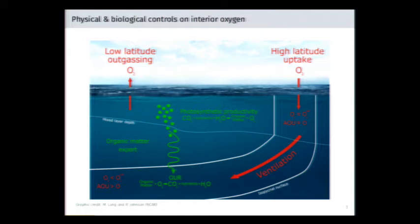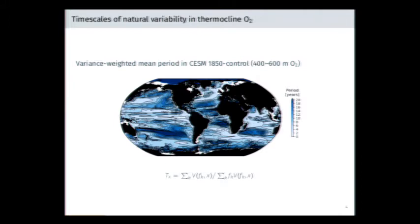We can see that in the context of a climate model. What I'm plotting here is the dominant period of variability of oxygen in the thermocline. We have an imprint of this reddening process by ventilation in that the extratropical thermocline shows a dominant frequency of variability in excess of 10 to 20 years — a pushing of the power spectrum towards decadal timescales by the reddening of circulation.